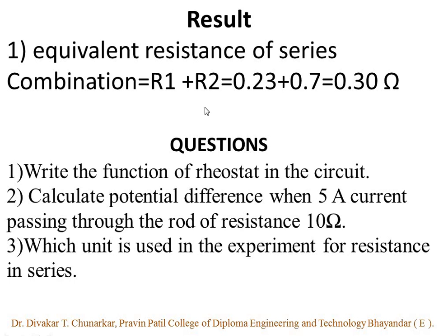Precaution: all connections in the circuit must be tight. Ammeter and voltmeter should be connected at the proper place. So, students, the equivalent resistance of the series combination we get is 0.93 Ohm — here you have completed experiment number 7.